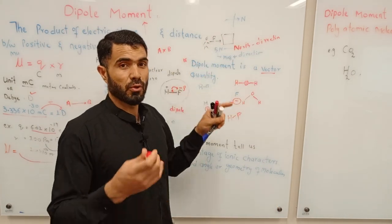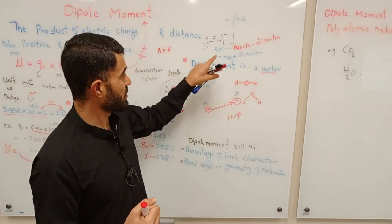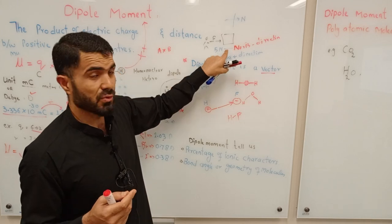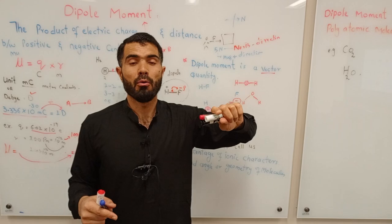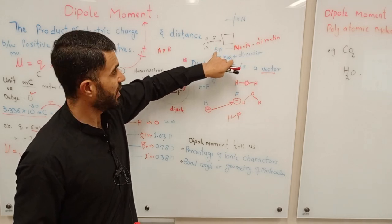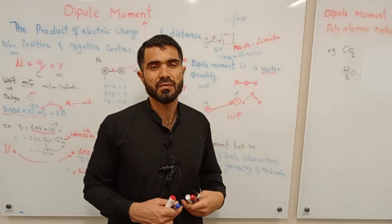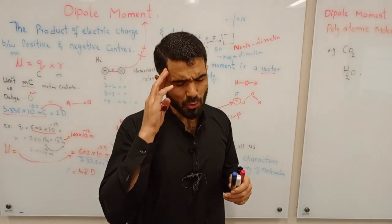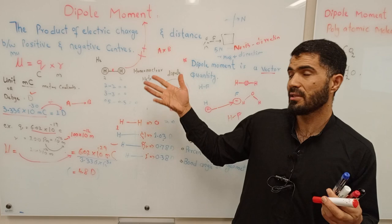For example, if you exert a force on a box — say 5 newtons — that is just magnitude. But if you say you exert 5 newtons of force toward the north, now it becomes a vector because you have both magnitude and direction. Similarly, dipole moment is a vector quantity: it has both magnitude and direction.